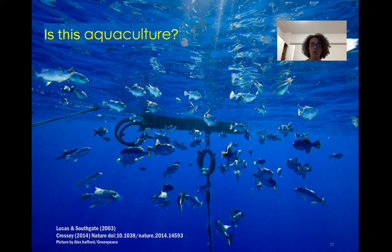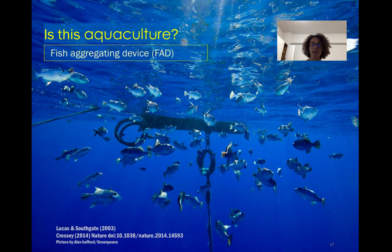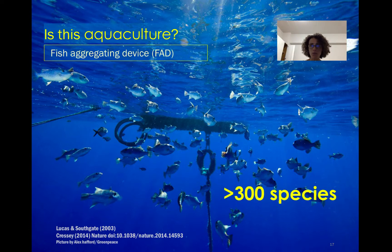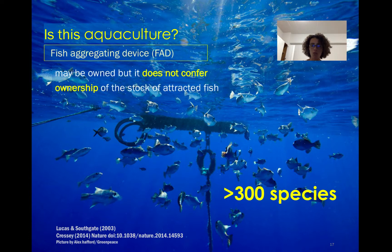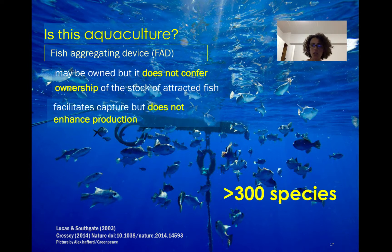Can you guess if this next example is an aquaculture activity or not? This picture shows a fish aggregating device. Fish are attracted by specific things — it can be a log, a buoy, or something that will attract fish and cause them to stay there. These can attract up to 300 different species. Someone may own this fish aggregating device, but that does not confer ownership of the attracted fish. Although it facilitates capture and harvesting, it does not enhance production. Therefore, this is not an aquaculture activity.